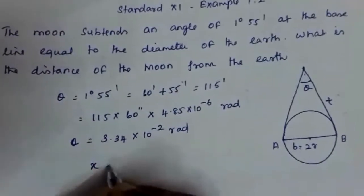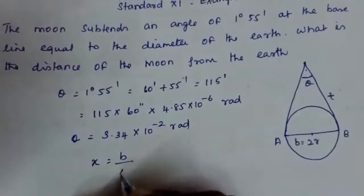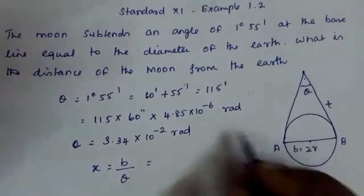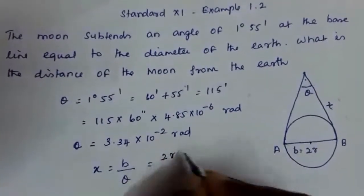Now we have to find out x. According to the parallax method, x is equal to b by theta. What is b? b is equal to 2r, two times of the radius.